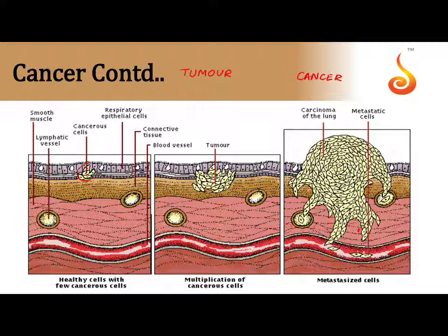Looking at this particular picture, in these two positions you can see there are certain cells which have lost control over their division. When I say it has lost control over its division, it means it has lost its cell-to-cell interaction, it has lost its cell-to-cell contact inhibition, and it has also lost the property of apoptosis. Apoptosis means cell death.